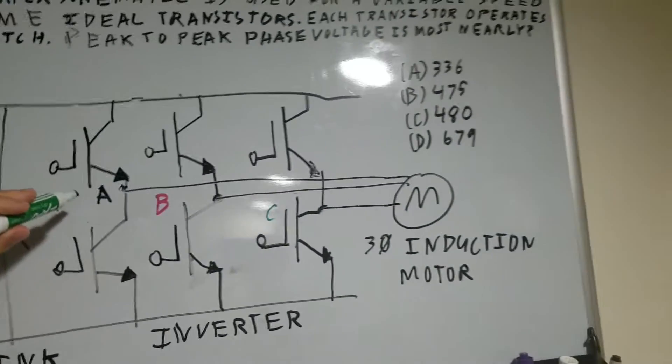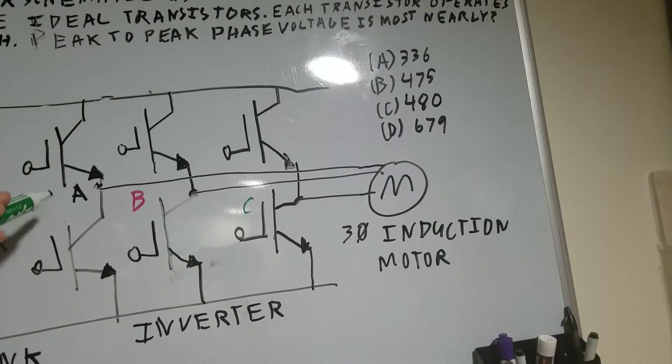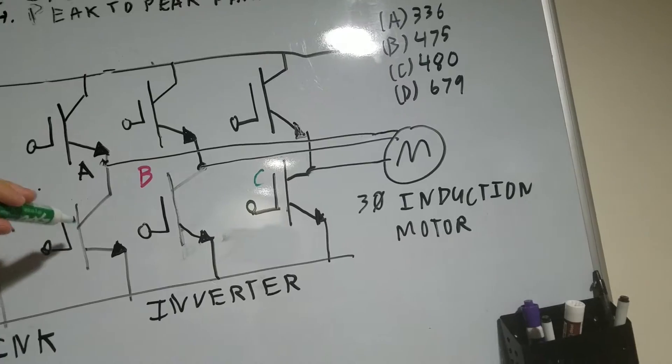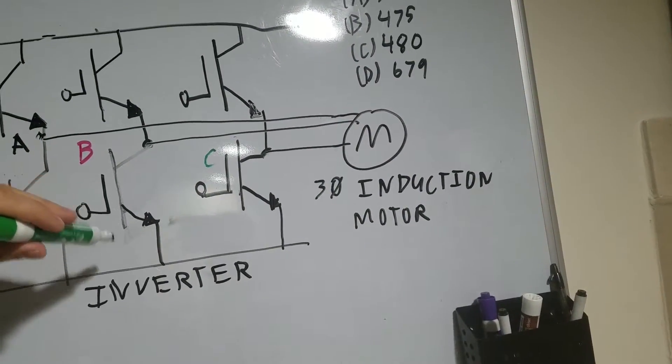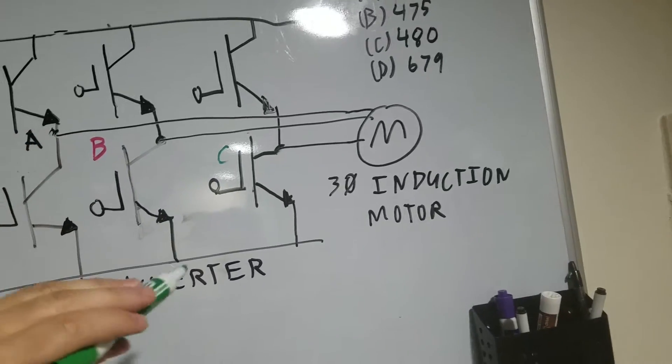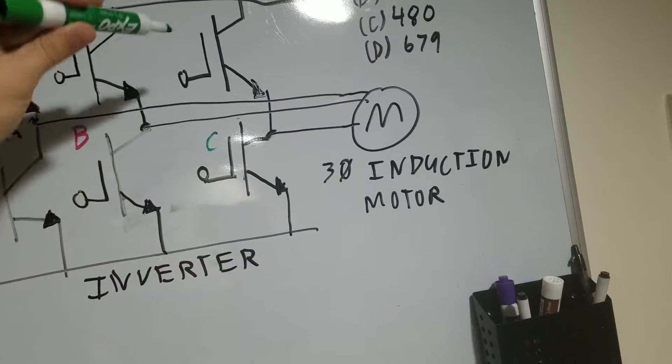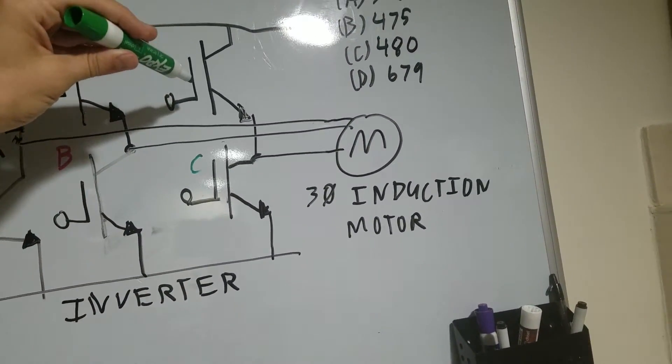So that would mean that this transistor turns on, this transistor turns off, this one's off, this one's on so B gets grounded, and then C is going to be on so this transistor turns on.